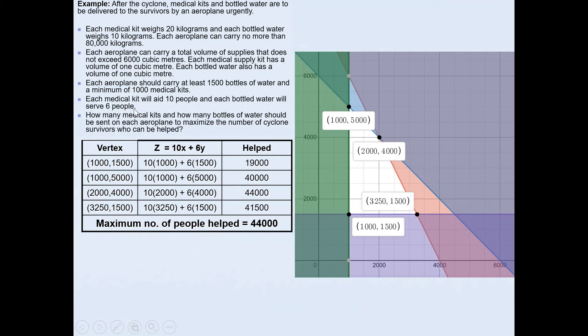Each bottle of water, which is variable Y, will save 6 people. So 10X plus 6Y. We had 10 times the x coordinate, 1000, plus 6 times the y coordinate value, 1500, gives you 19,000 - the number of people that they can help using this combination. We did the same thing for the other coordinates. And we can clearly see that 44,000 is the maximum value here.